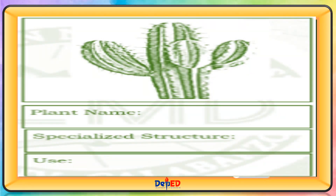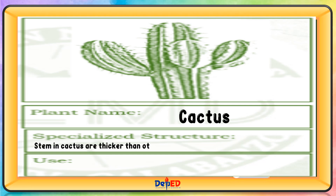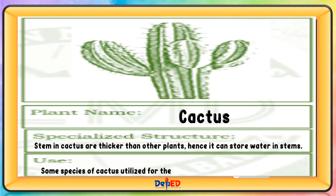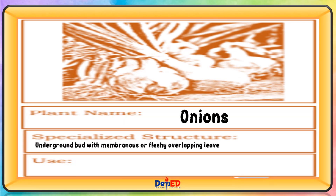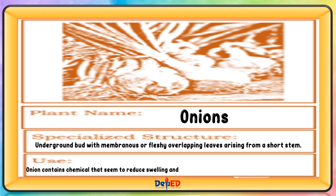Plant name: cactus. Specialized structure: stem in cactus is thicker than other plants, hence it can store water in stems. Some species of cactus are utilized for their medical value and as a source of food. Plant name: onions. Specialized structure: underground bud with membranous or fleshy overlapping leaves arising from a short stem. Onion contains chemicals that seem to reduce swelling and reduce levels of cholesterol and sugar in the blood.